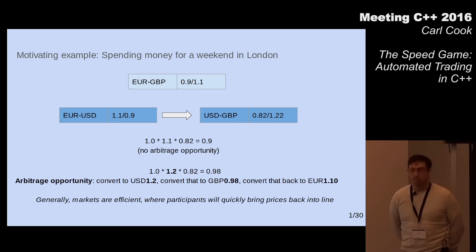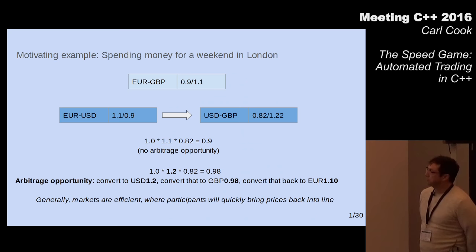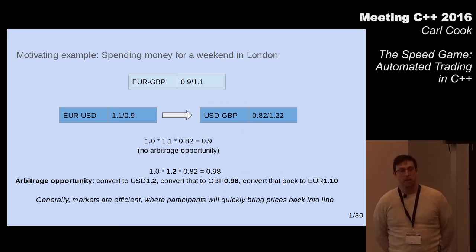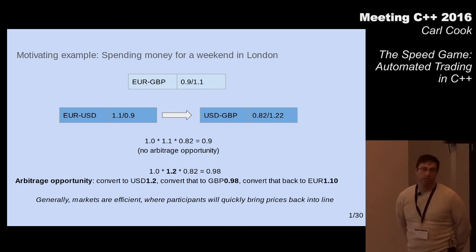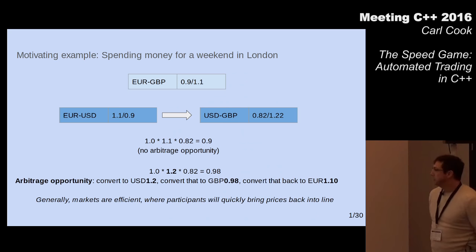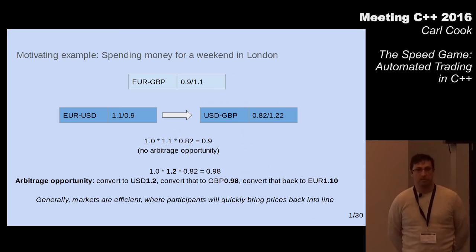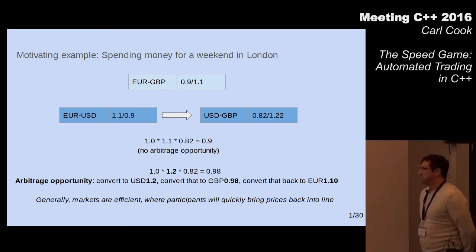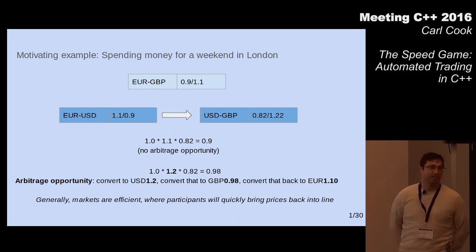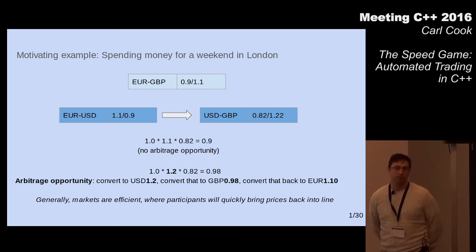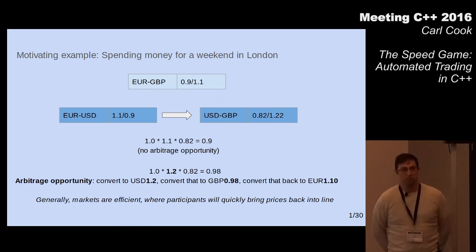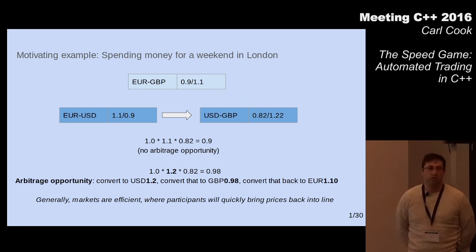If that equation didn't hold, there would be money to be made. For example, if the euro-to-US rate went up to 1.2 instead of 1.1 while other prices stayed the same, you could convert euros to US dollars, then to British pence, then back to euros and have a free 10%. Do that a million times at a thousand dollars a time and you'd be quite rich. Trading companies exist to make sure these prices stay in line — if they're not, they bring them back quickly. We're all competing, so the fastest systems make the most money.